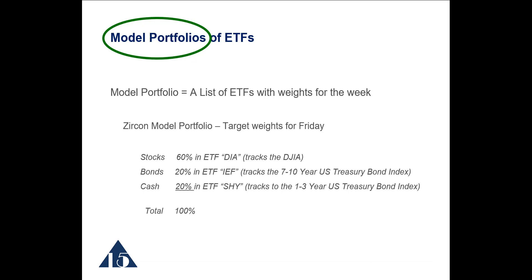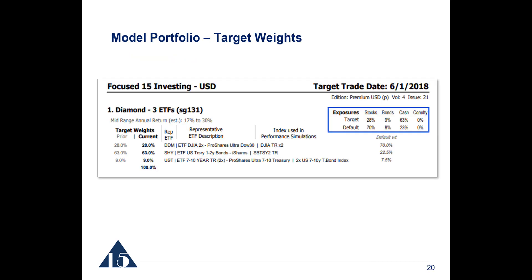If you wanted to increase the weight in stocks, you'd simply buy more shares of the ETF DIA. The model portfolios are shown in this format in the weekly publication — there are a lot of numbers, which I'll describe in more detail in a separate video. The key point here is that you really only need to focus on three numbers: 28, 63, and 9. If your retirement account holds the ETFs DDM, SHY, and UST at these weights, you're doing a good job of tracking that model portfolio.